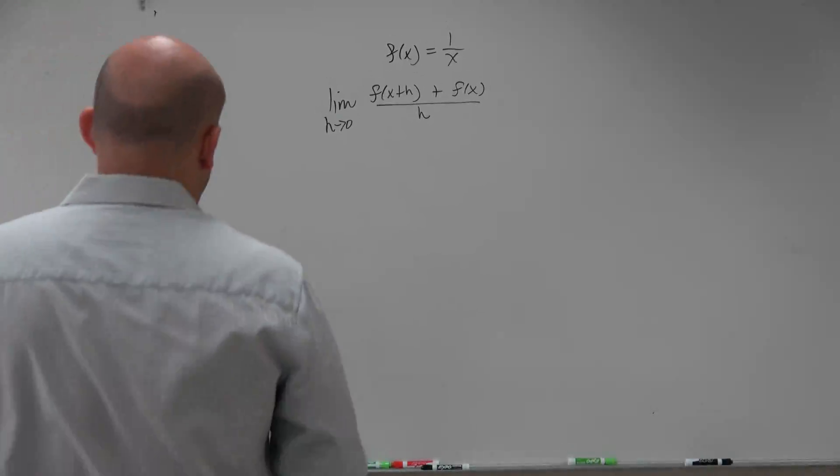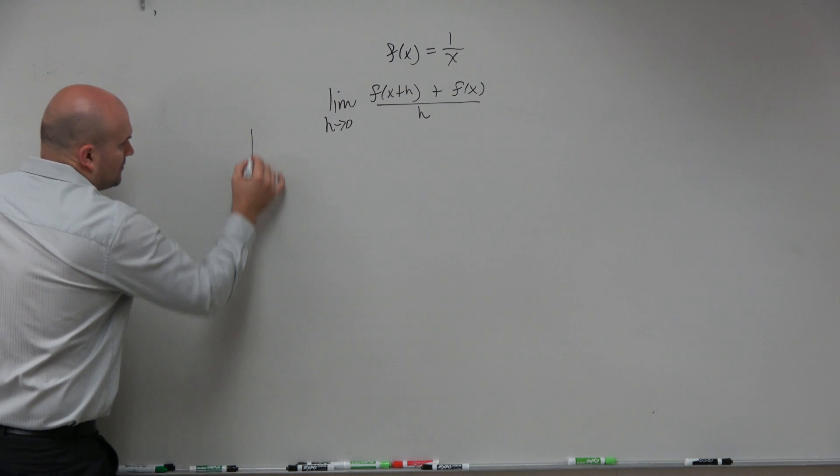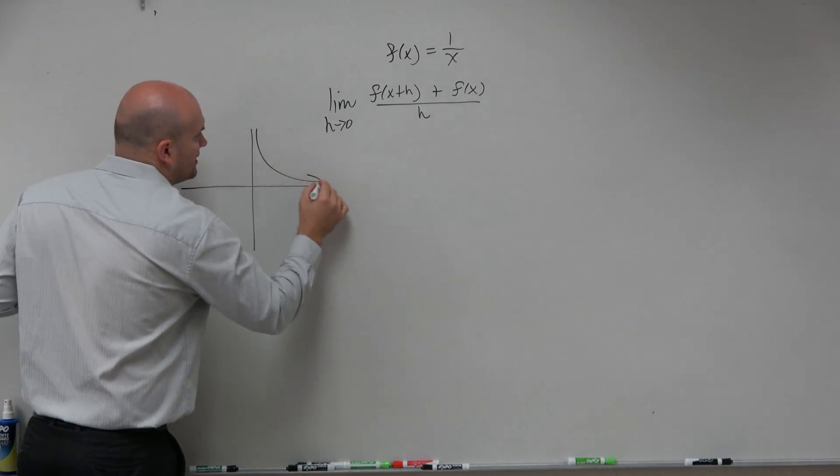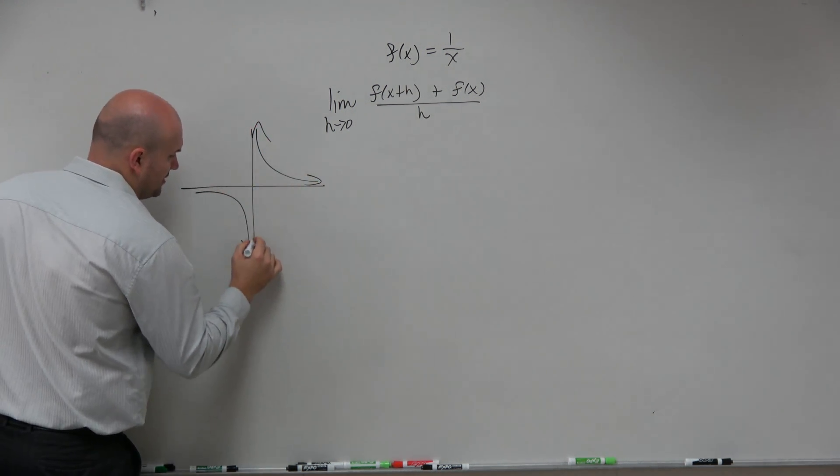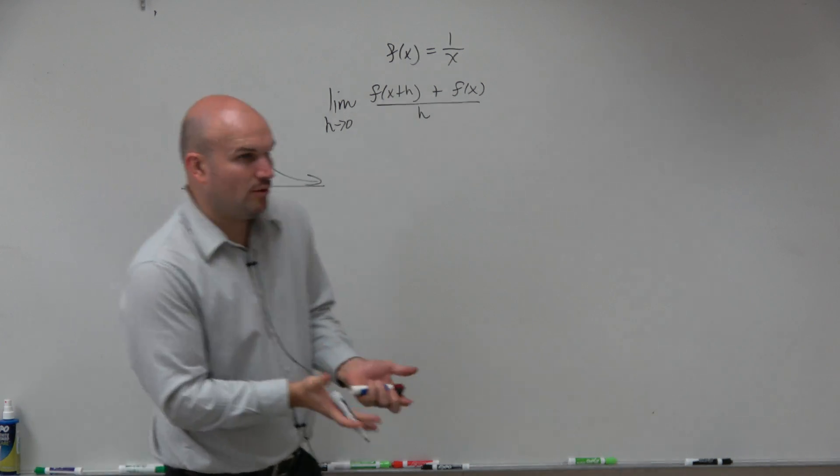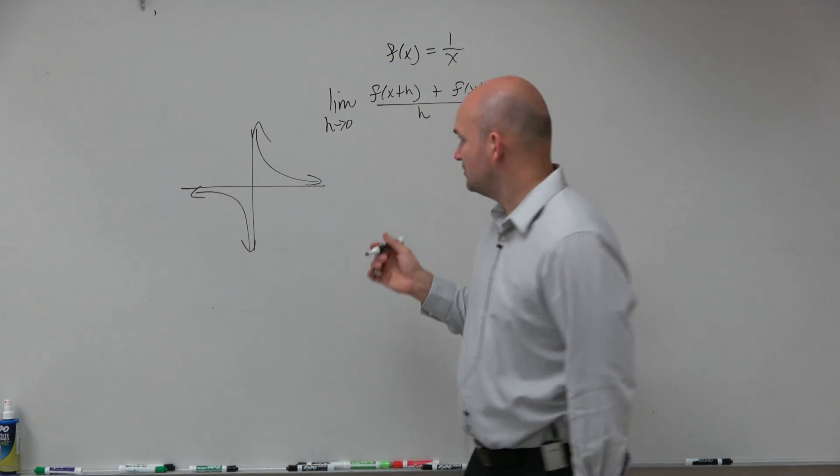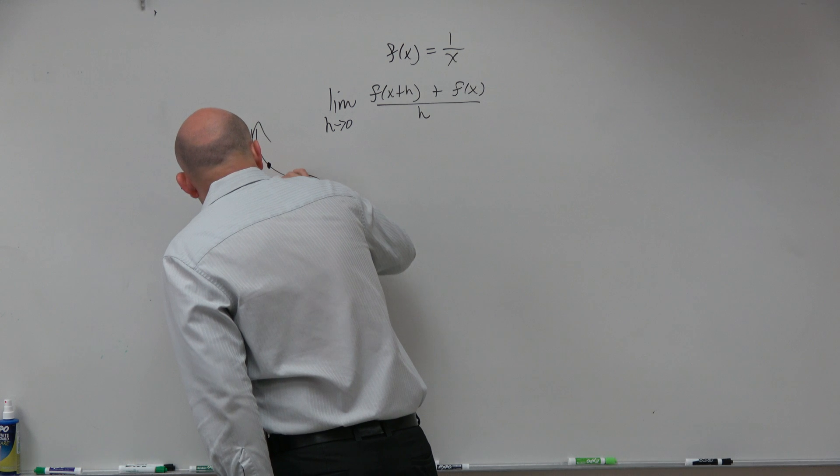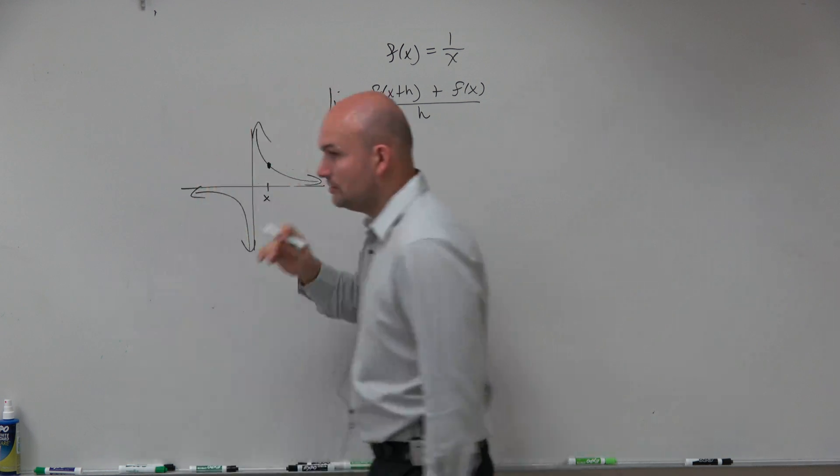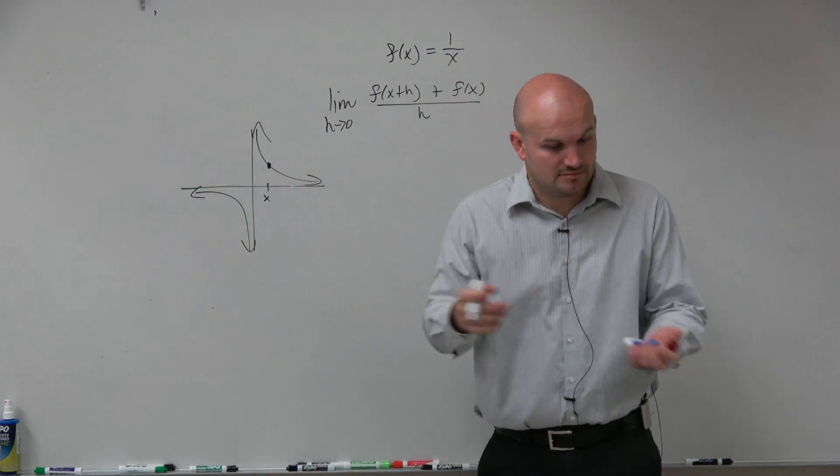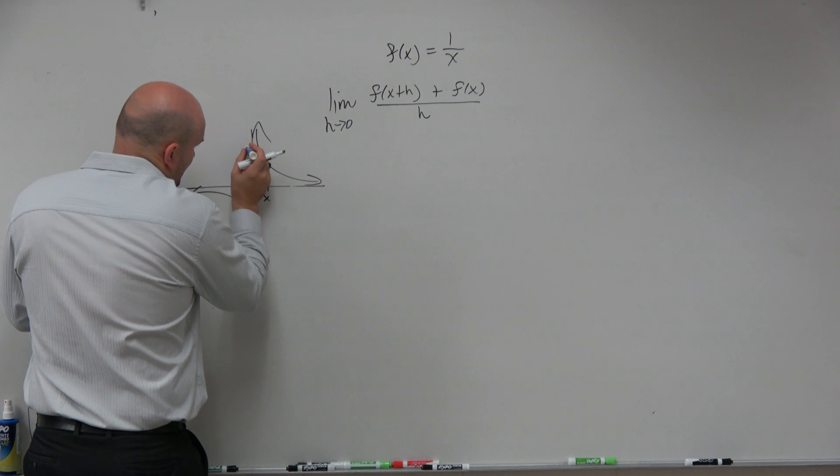When you guys look at 1 over x, it's basically this little hyperbola here. But any point on here, let's call this just x, you can create a tangent line, right? There can be a tangent line drawn right there.